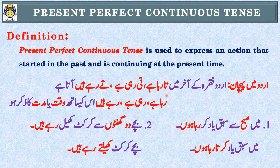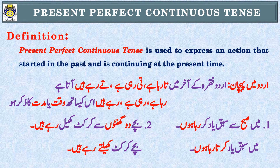Summary: 'تا رہا ہے، تی رہی ہے، تے رہے ہیں' ہو تو یہ Present Perfect Continuous Tense کا sentence ہے۔ اور اگر 'رہا ہے، رہی ہے، رہے ہیں' ہو تو دیکھنا ہے کہ اگر اس کے ساتھ وقت یا مدت کا ذکر ہے تو Present Perfect Continuous Tense، ورنہ Present Continuous Tense۔ اب دیکھتے ہیں اگر اردو سے انگلیش میں translation کرنی ہے تو اس کا formula کیا ہے۔